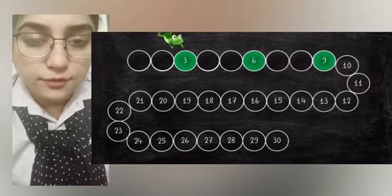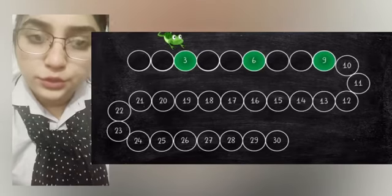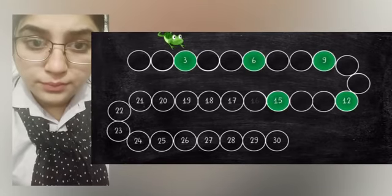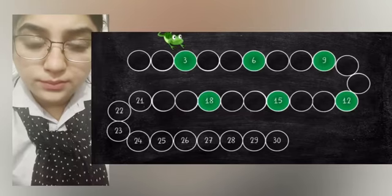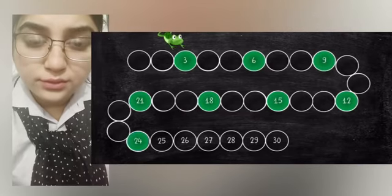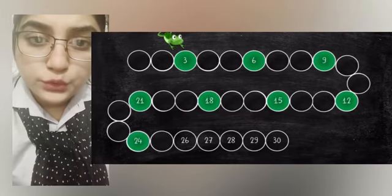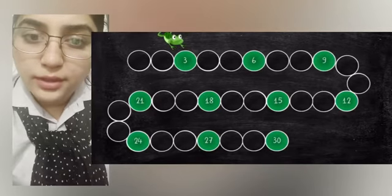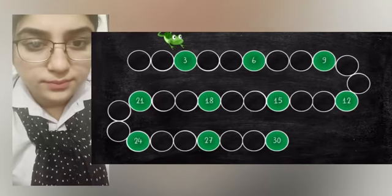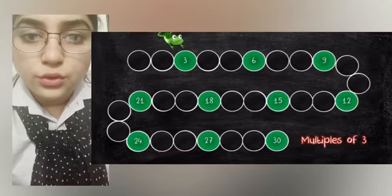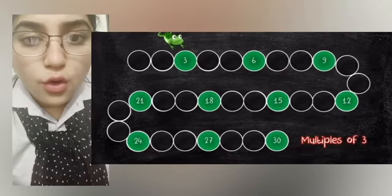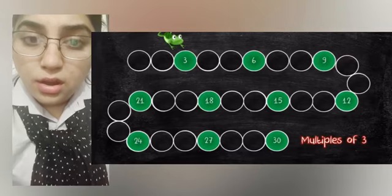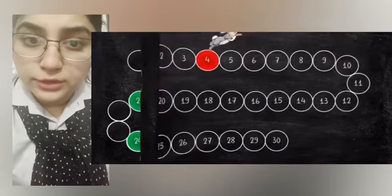In the same way the frog will jump on 12, 15, 18, 21, 24, 27, and 30. Students, note that all these numbers in green are the multiples of three.